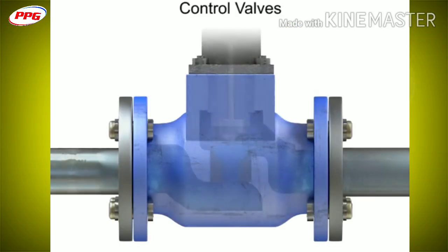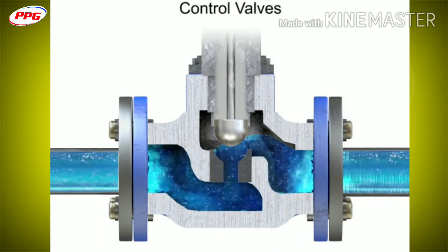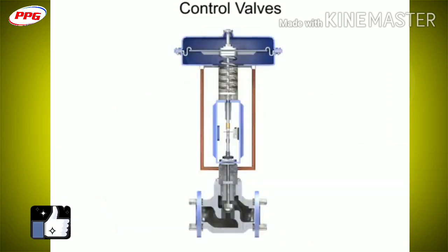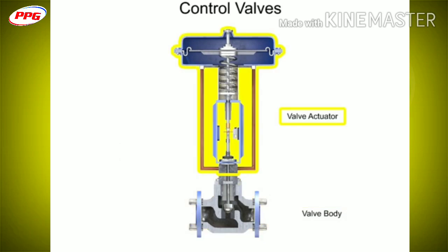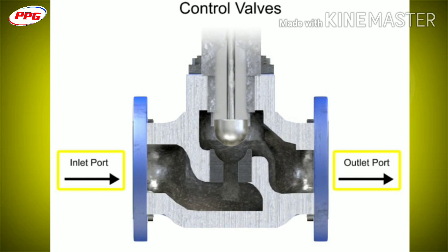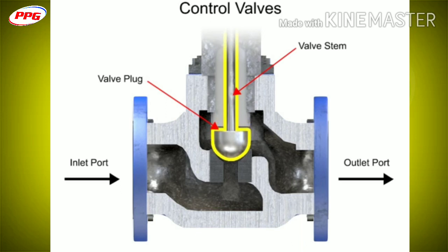Control valve actuators control fluid in a pipe by varying the orifice size through which the fluid flows. Control valves contain two major components: the valve body and the valve actuator. The valve body provides the fluid connections and a movable restrictor comprised of a valve stem and plug that is in contact with the fluid that varies the flow. The valve actuator is the component that physically moves the restrictor to vary the fluid flow.